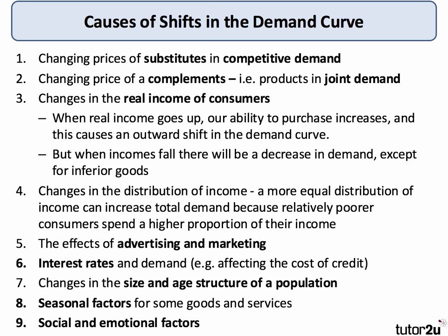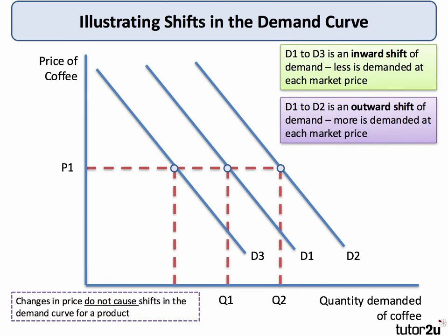Take a moment, if you need to, to press the pause button so you can get some good notes on key causes of shifts in demand. Let's illustrate how this happens. A key revision point: a change in the market price — for example, the price of coffee — does not cause a shift in the demand curve. Please remember this. A change in the market price of coffee causes a movement along the demand curve. Factors other than the price of coffee, if they change, will cause a shift in demand for coffee. D1 to D3 is an inward shift of demand, meaning less is bought at price P1. D1 to D2 is an outward shift of demand, meaning more is demanded at each price.